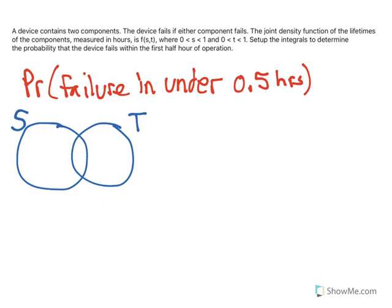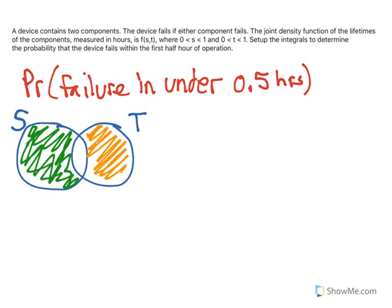So there's three different ways that this fails. The first way is if just s fails. So I'm going to shade that in here. Just s fails. The second way is if just t fails. So s survives the first half hour, but t does not. And then the third way is if they both fail during the first half hour.